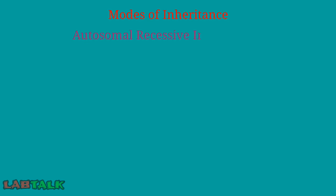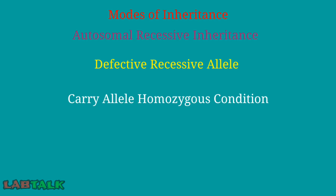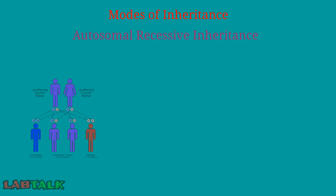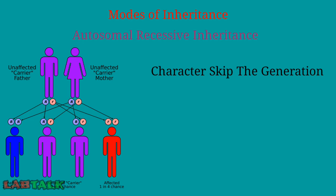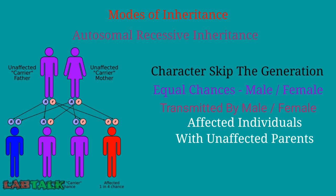In autosomal recessive inheritance, the recessive allele is defective while the dominant allele is normal. Affected individuals carry the recessive allele in homozygous condition, whereas unaffected individuals carry the dominant allele in either homozygous or heterozygous condition. Key features: the trait can skip generations; there is equal chance for both male and female children to be affected; it is transmitted by either sex; and most affected individuals have unaffected parents. If both parents are affected, all children should be affected.